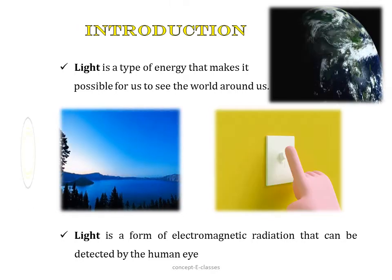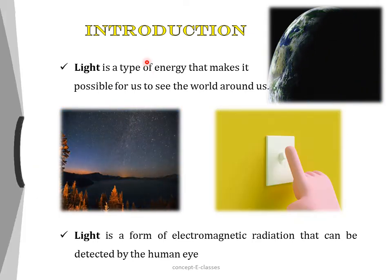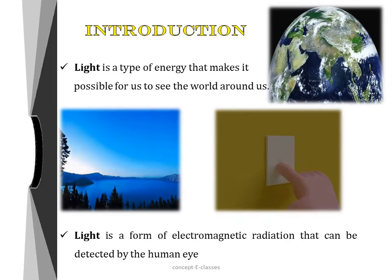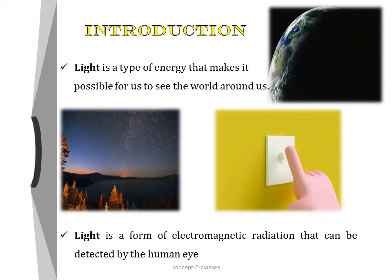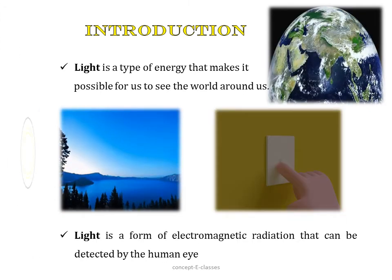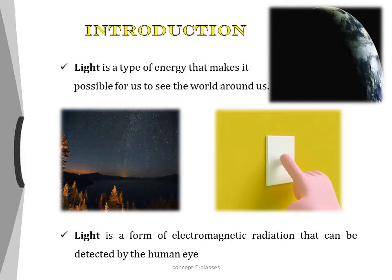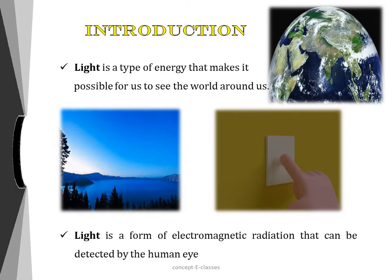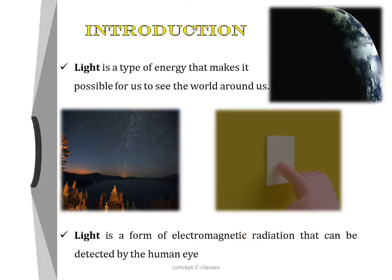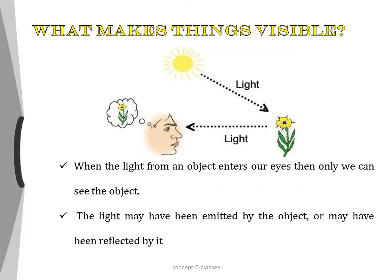Light is a very important aspect of our life. We cannot do anything without light. Light is a type of energy that makes it possible for us to see the world around us — mountains, rivers, plants, trees, chairs, people and many things around us can be seen with the help of light. We cannot see anything in a dark room. The definition of light is: it is a form of electromagnetic radiation that can be detected by the human eye.